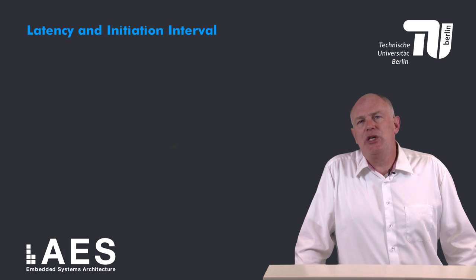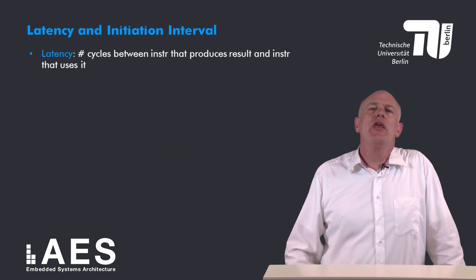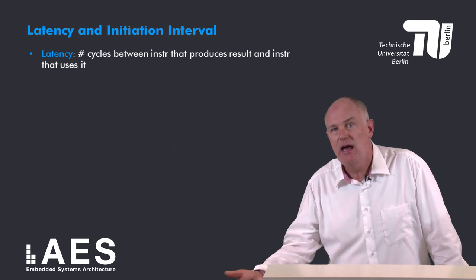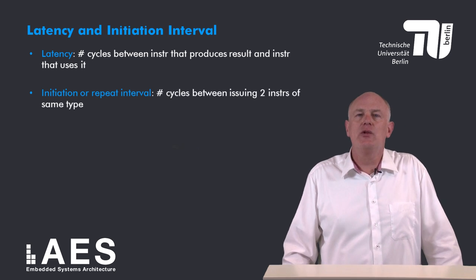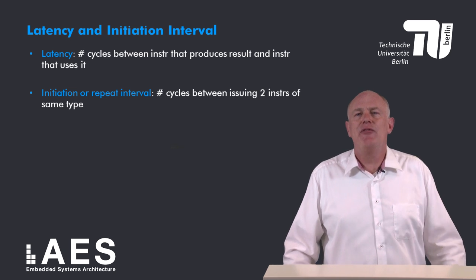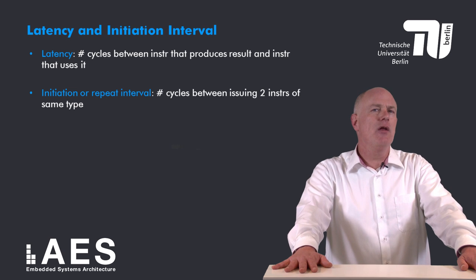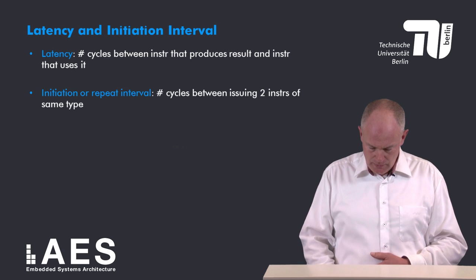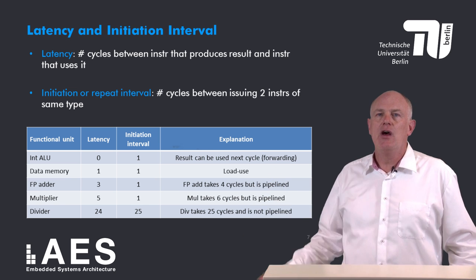If there are multiple execution pipelines of different lengths we should define the latency and initiation interval of each functional unit. The latency is defined as the number of cycles that must elapse between an instruction that produces a result and an instruction that consumes or uses the result. The initiation or repeat interval is defined as the number of cycles that must elapse between issuing two instructions of the same kind — in other words, between two instructions executed on the same functional unit. In the remainder of this lesson I will assume the latencies and initiation intervals shown in this table.